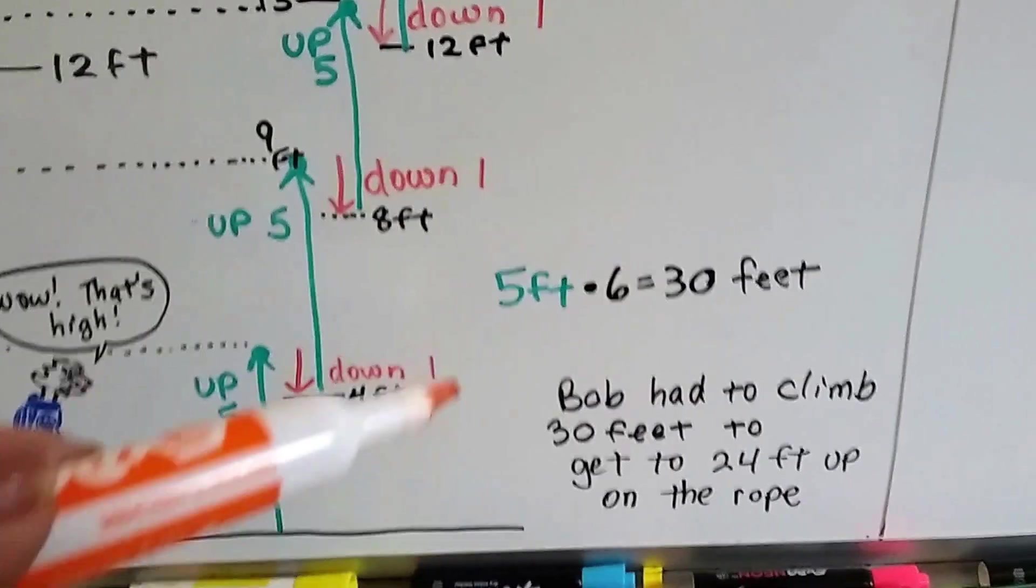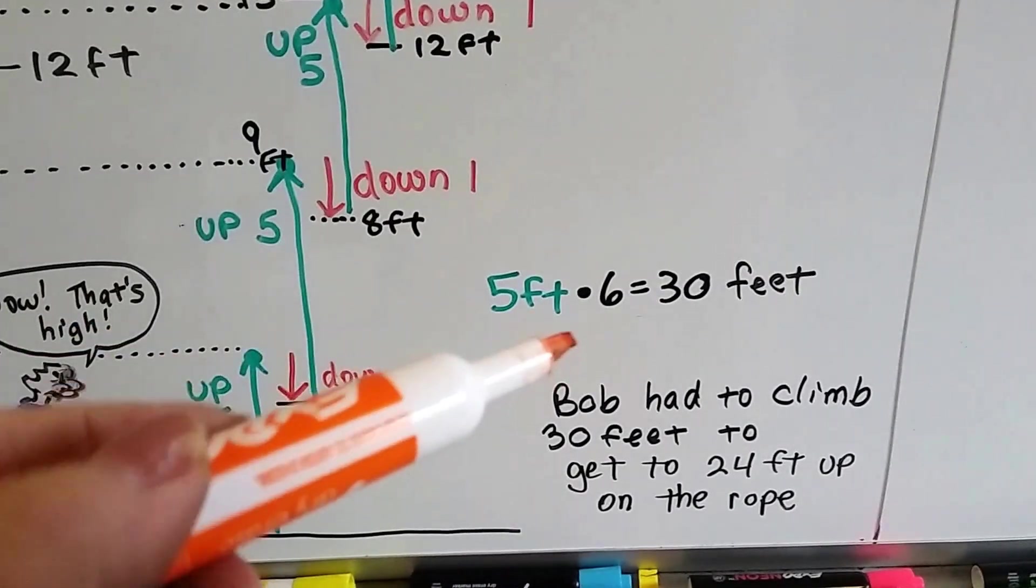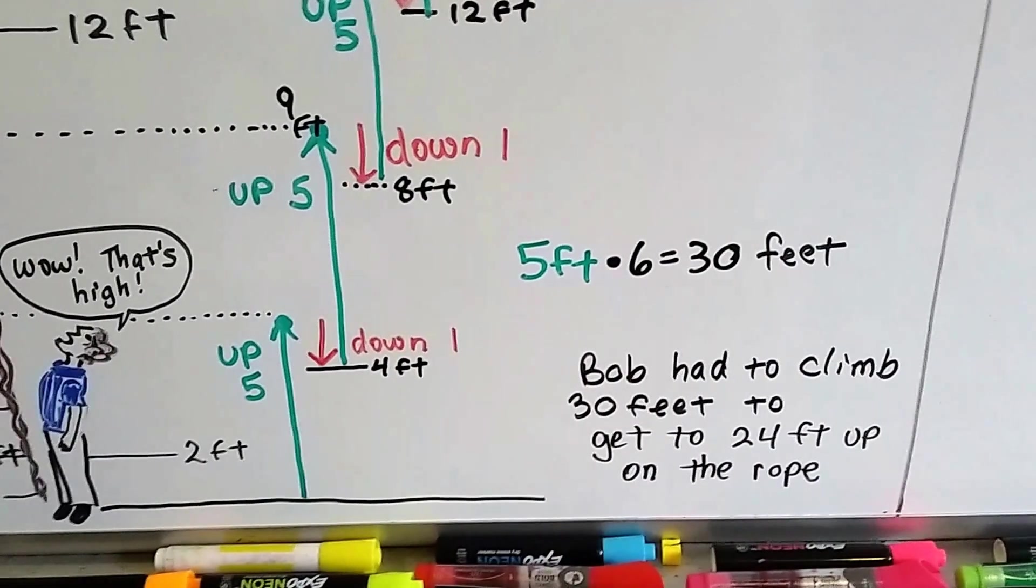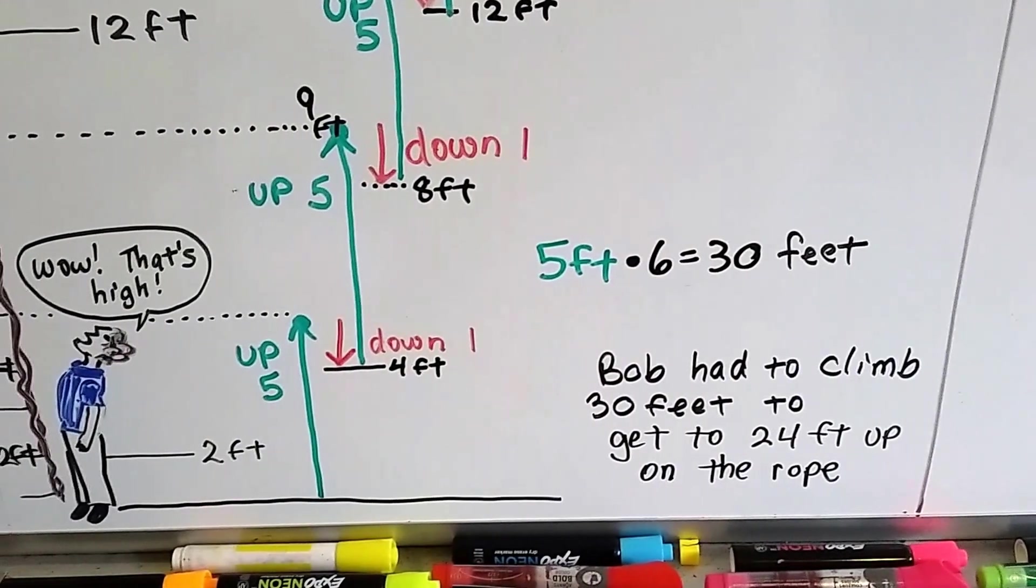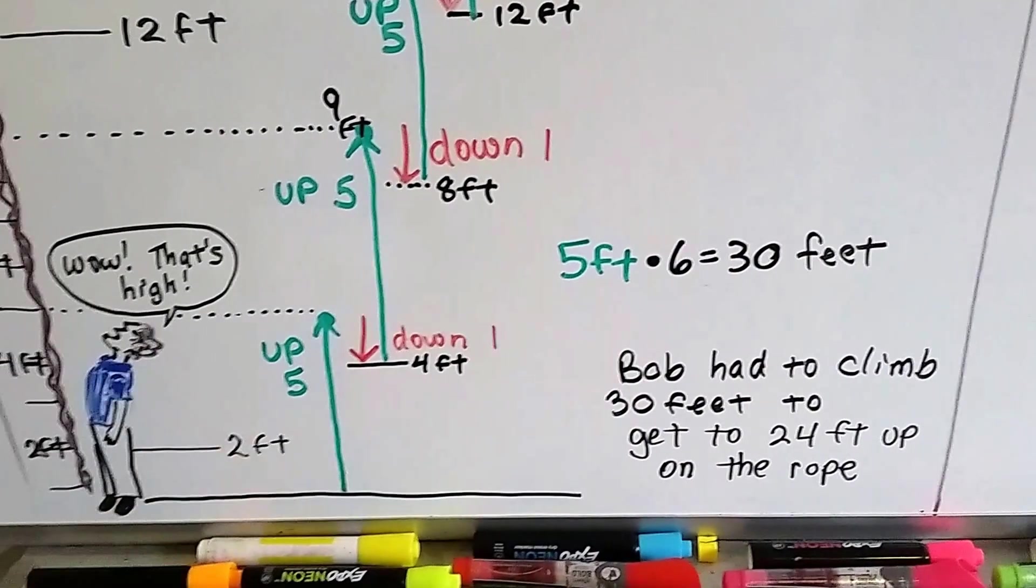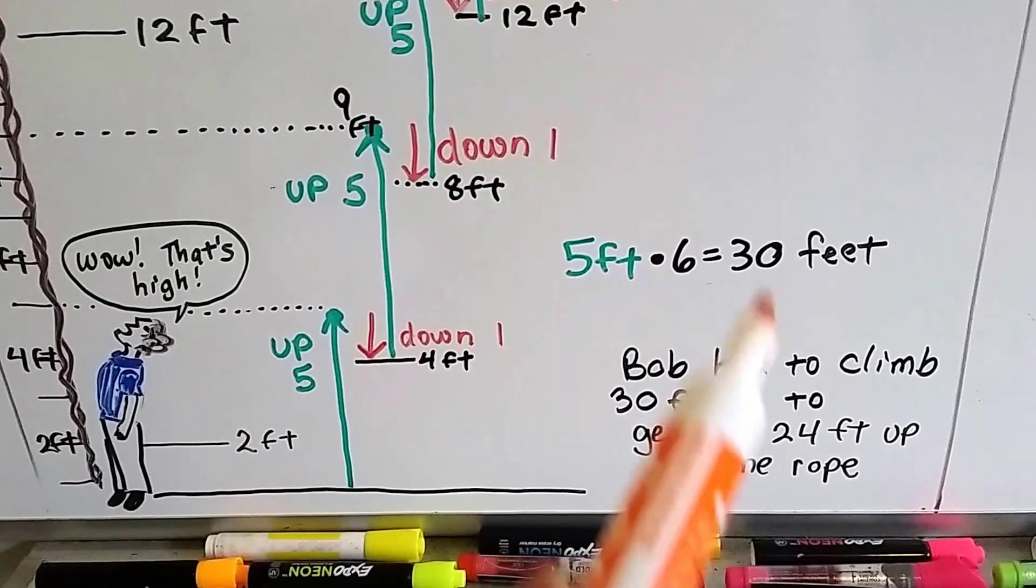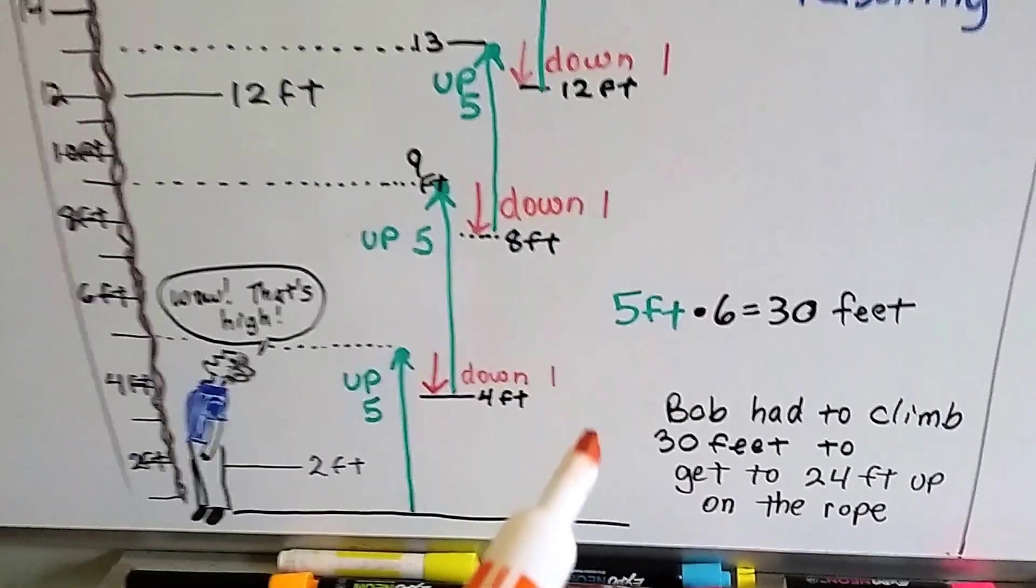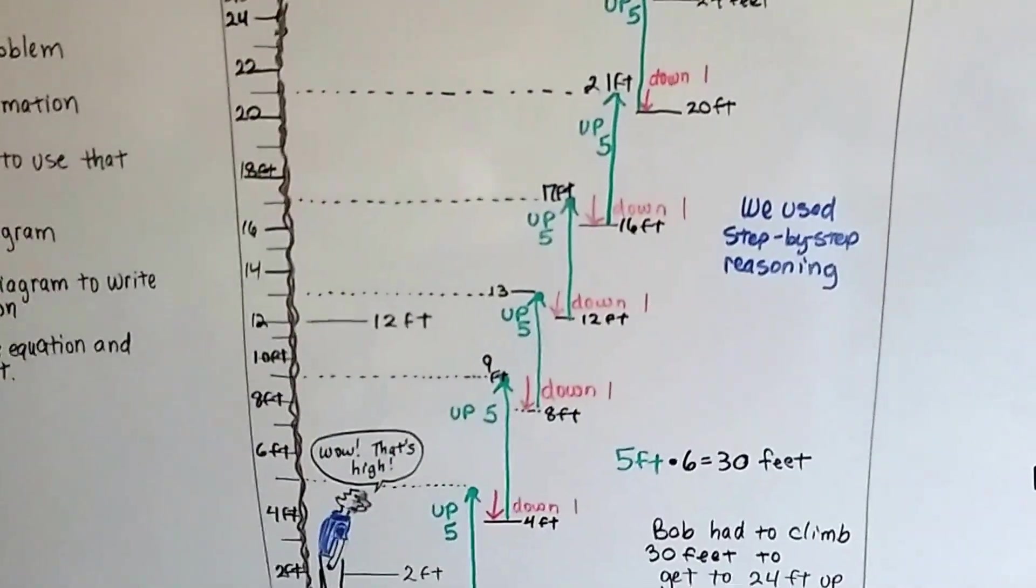So that gives us our equation. He did five feet six times. He climbed thirty feet. Poor Bob had to climb thirty feet just to get to the twenty-four foot up on the rope at that mark. He lost a foot every single time he did it. But that helped us write the equation.